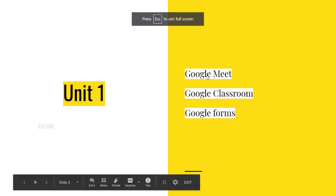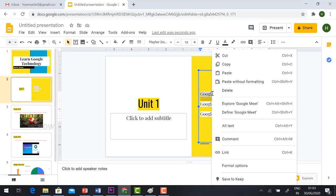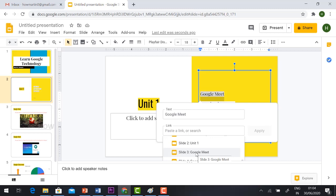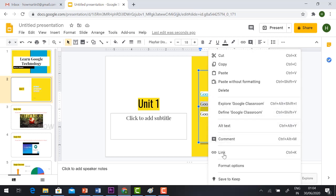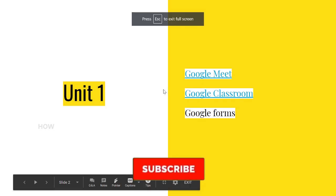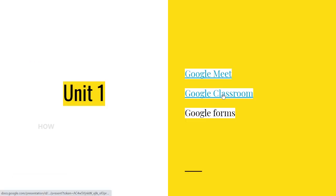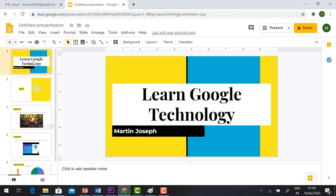Now I'll show you how to make it interactive. When I click on the slide, I want it to navigate to Google Meet, Google Classroom, or Google Forms. To link text in Google Slides, select the text, right-click, and choose the Link option. It will ask you to link to a slide — select the slide number. For example, Google Meet is on slide three. Click Apply. Do the same for Google Classroom. Now in presentation preview, clicking the link will take you directly to the corresponding slide.